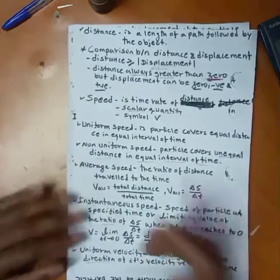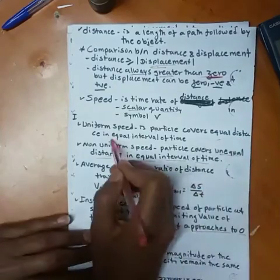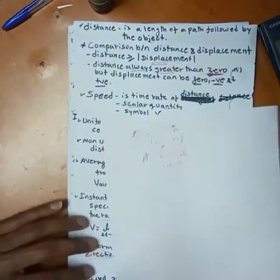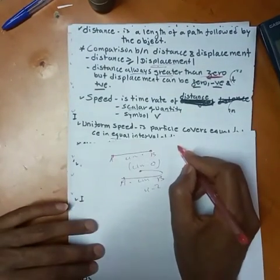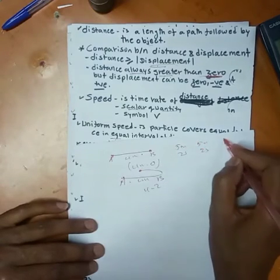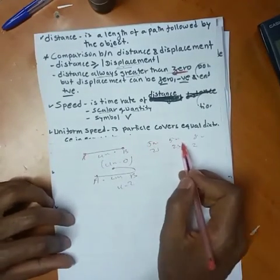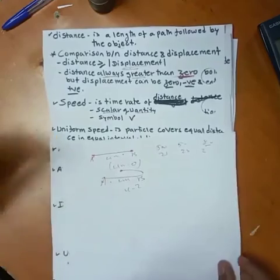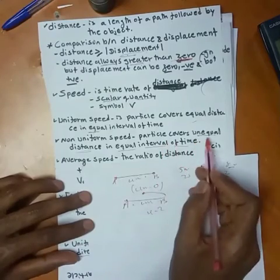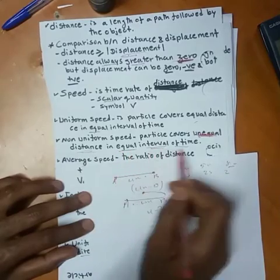In uniform speed, a particle covers equal distance in equal intervals of time. For example, 1 meter every 3 seconds, or 2 meters every 3 seconds consistently — this represents equal distance in equal time intervals.